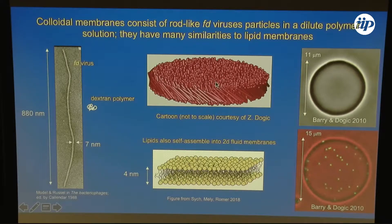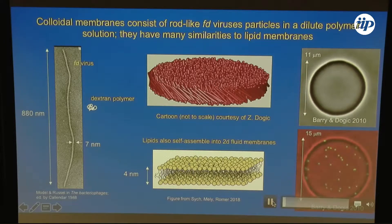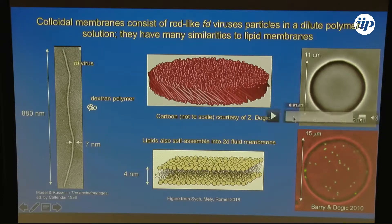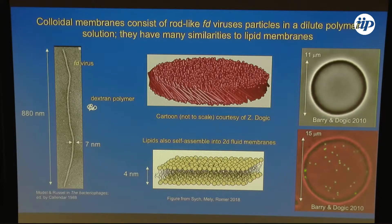These membranes are analogous to lipid bilayer membranes. They're fluid — here you see a movie where a few of the particles have been fluorescently labeled, and they have a beautiful mean square displacement which is linear in time. They fluctuate readily, just like fluid membranes, and you can see the edge is fluctuating.